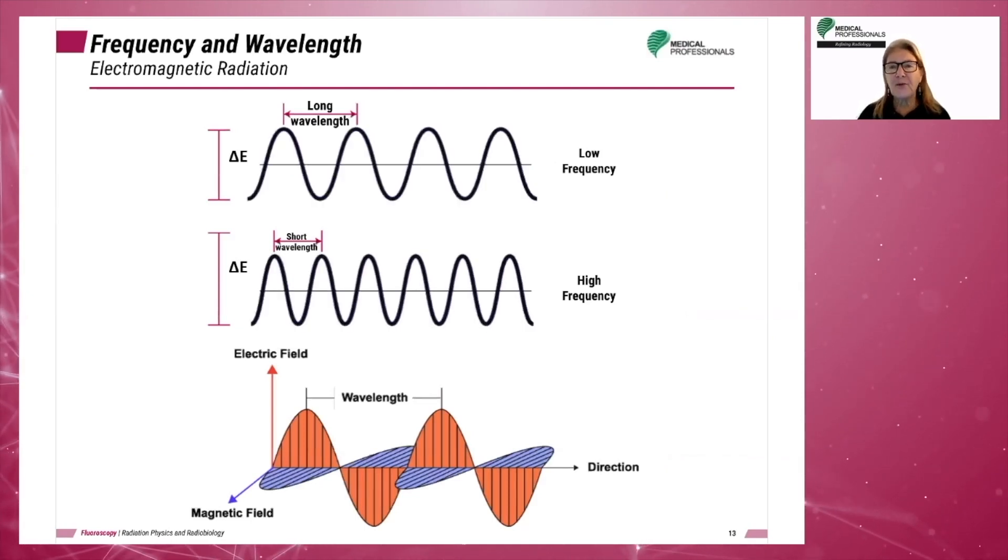The x-ray beam is described as having a frequency and wavelength, as does all energy on the EMS. Frequency is defined as how often something occurs in a given length of space or time. The more often it occurs, the higher the frequency. In our example, we see a sine wave form with peaks and valleys.